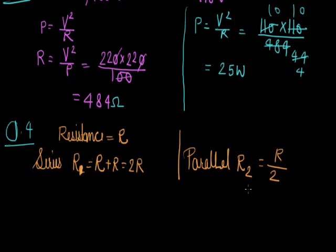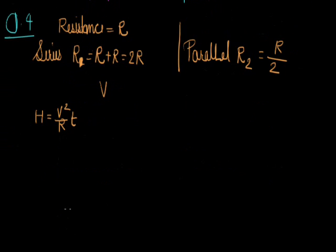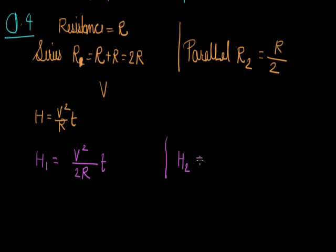They are connected across the same potential difference V. Since the same potential difference is given, we should use the formula V²/RT to calculate heat. For the first case (series), heat energy H1 = V²/(2R)×T. For the second case (parallel), heat energy H2 = V²/(R/2)×T = 2V²/R × T.